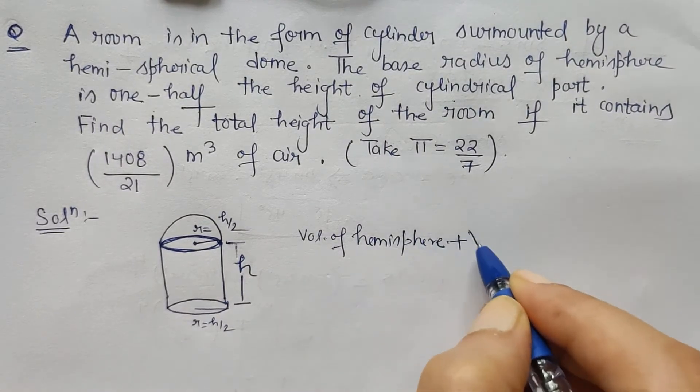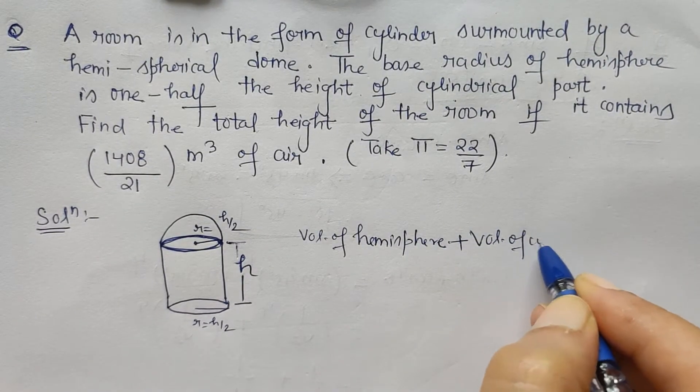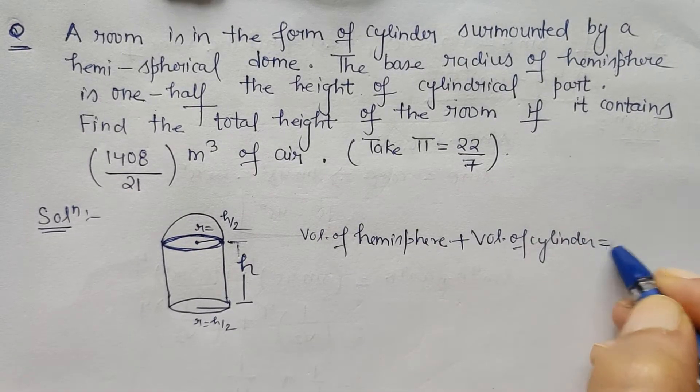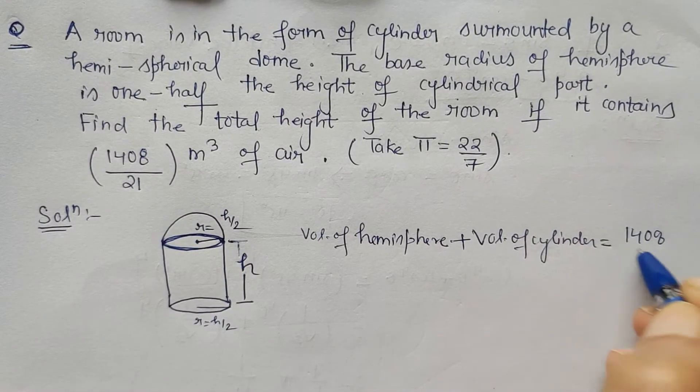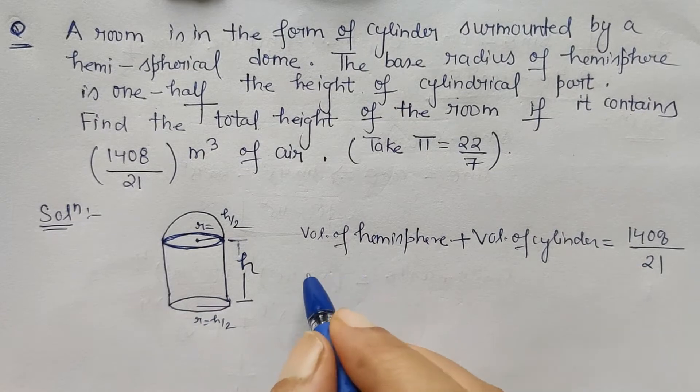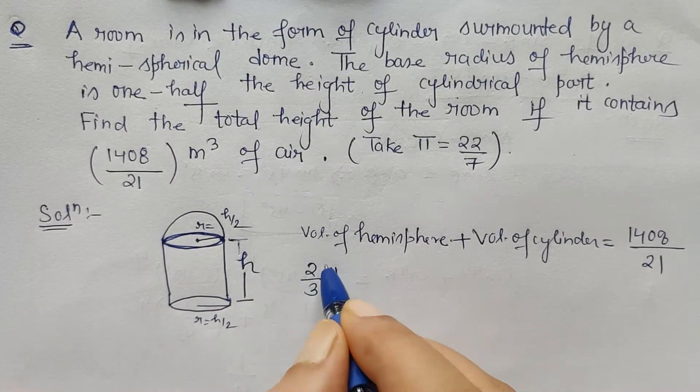So we will be writing volume of hemisphere plus volume of cylinder, and we will equate this with 1408 upon 21. Volume of hemisphere is 2 by 3 pi r cube.